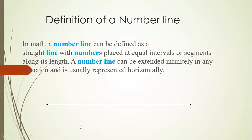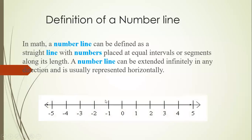We write zero in the center. All numbers greater than zero go on the right side, and numbers less than zero go on the left side. This line can be extended on both sides — it depends on the numbers. It is usually represented horizontally.